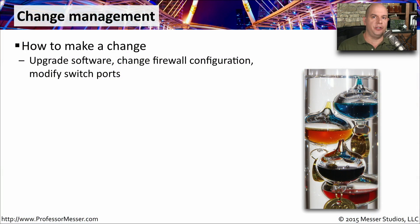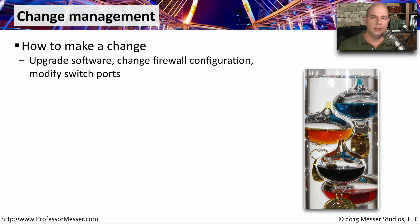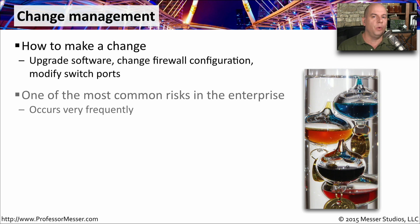There are always going to be changes happening in your network. You're going to be upgrading software and modifying switch configurations, updating a firewall, and changing a routing setting. All of these changes need to have a formal process behind them so that you can avoid problems. These can create significant risk to the enterprise if the network doesn't operate the way you would expect.